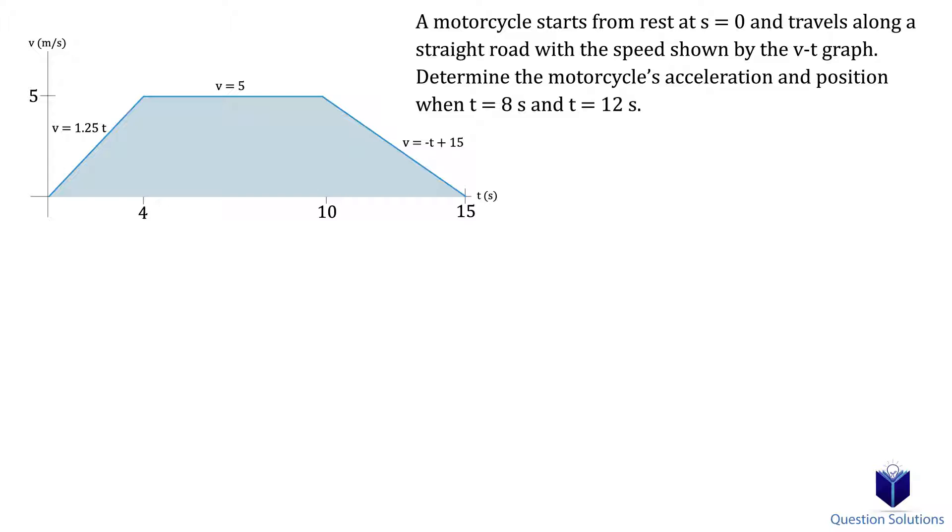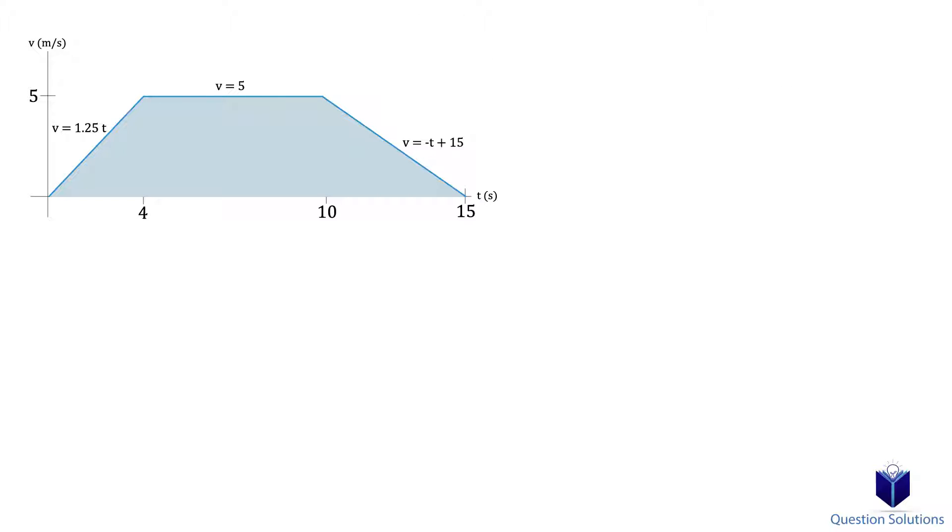Let's first write down the velocity equations for each segment, which is actually given to us in this question. For the first segment, between 0 seconds and 4 seconds, we have v equals 1.25t. For the section between 4 seconds and 10 seconds, we have v equals 5, and the last section between 10 and 15 seconds is v equals negative t plus 15.